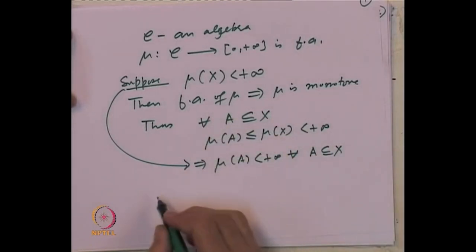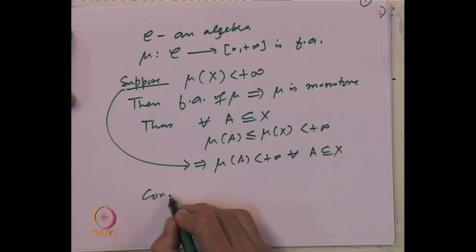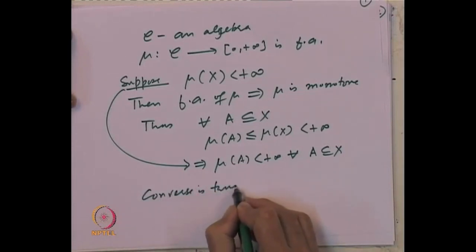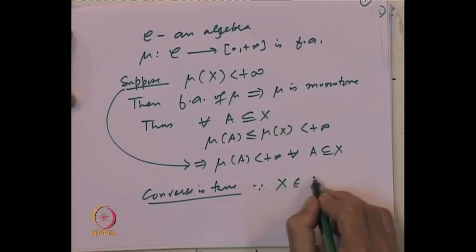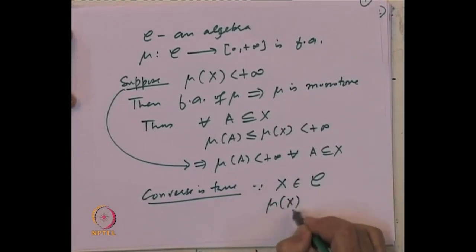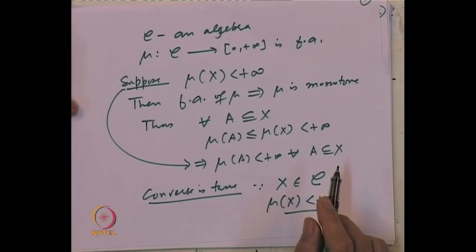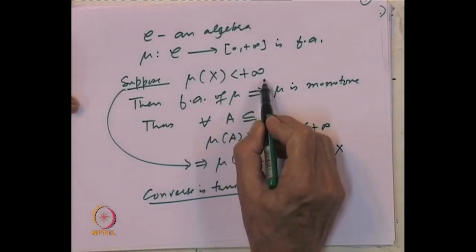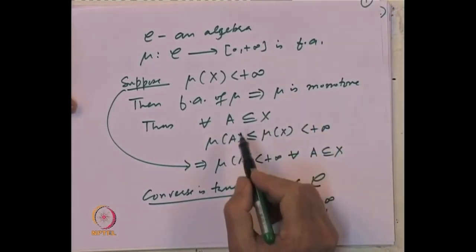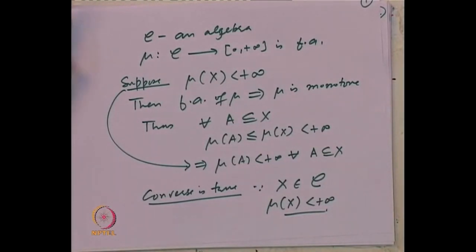The converse is obviously true because X belongs to C and so mu(X) is finite. Whenever we are dealing with finitely additive set functions, saying mu is totally finite, it is enough to say that mu(X) is finite and as a consequence, mu of every subset will be finite. For a finitely additive set function on an algebra, mu(X) finite is the same as saying mu(A) is finite for every A in the algebra.